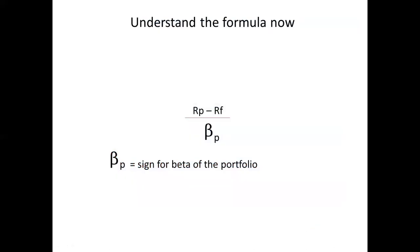Moving ahead, it is important to understand the formula. It is very simple: it is RP minus RF — what we learned in the first box — divided by the beta of the portfolio, which is what we looked at in the second box. So: RP minus RF, divided by beta of the portfolio.